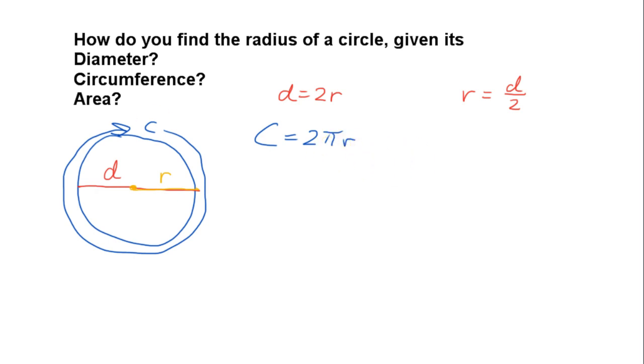So all we have to do with this one is to divide each side by 2 pi, so that we can get r by itself. What that gives us then is r equals the circumference divided by 2 pi.